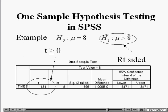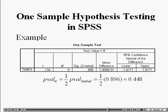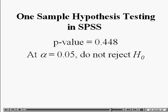So the p-value for this test is going to be one-half of the two-tailed p-value — one-half of 0.896 — which is 0.448. If we set our alpha at 0.05, the p-value is not smaller than alpha, so we do not reject the null hypothesis.